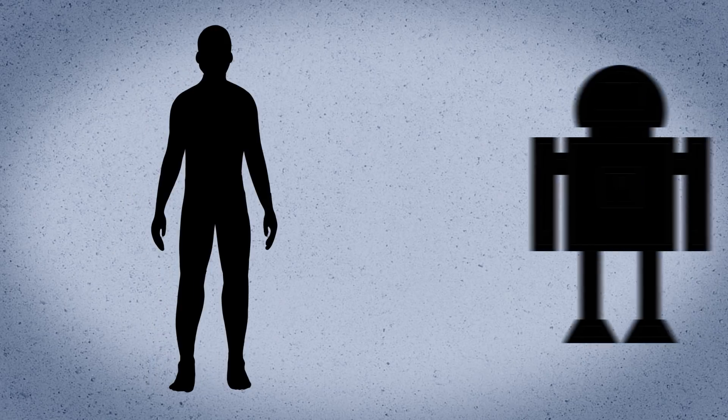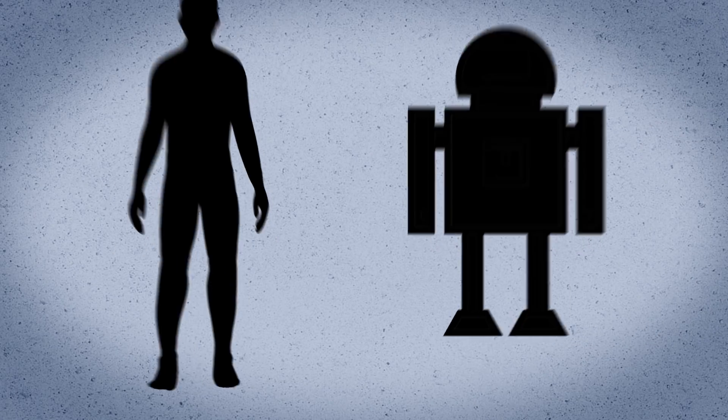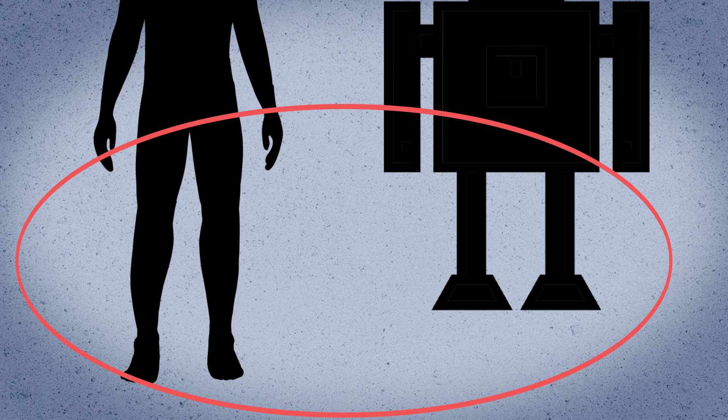One of the hardest parts is giving humanoid robots something we take for granted: our ability to walk on two legs.